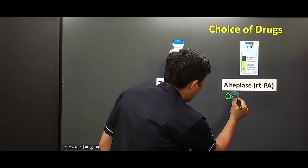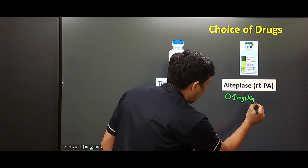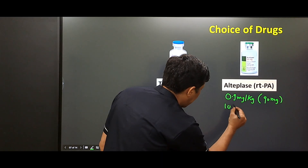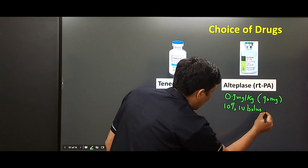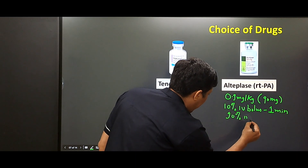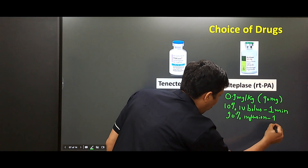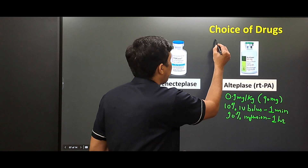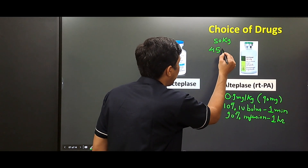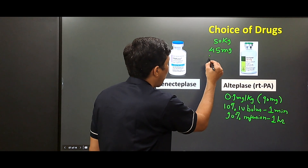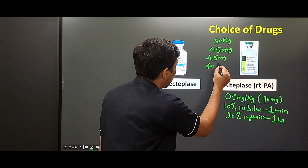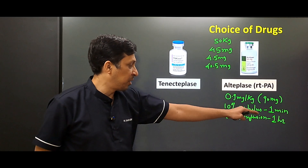For alteplase, the dose is 0.9 mg/kg with a maximum of 90 mg. Ten percent is given as an IV bolus over 1 minute, and the remaining 90% is given by infusion over 1 hour. For example, for a 50 kg patient: total dose is 45 mg; 4.5 mg is given as IV bolus in 1 minute, and 40.5 mg is given by infusion over 1 hour.